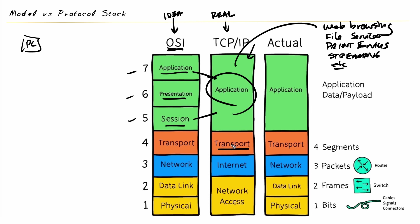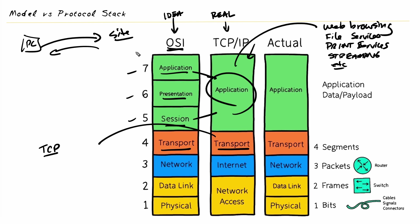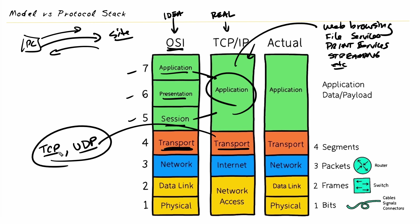At layer four, the transport layer, the functionality is identical to the OSI reference model. In the world of TCP/IP, we have real protocols that implement it — including TCP, which is a reliable protocol that does sequencing and acknowledgments to ensure the PC and the website are not dropping any data. If data is dropped using TCP, it can be resent to make sure both parties receive everything expected. We also have UDP, User Datagram Protocol, which doesn't care about reliability — and these are the actual protocols representing the transport layer.